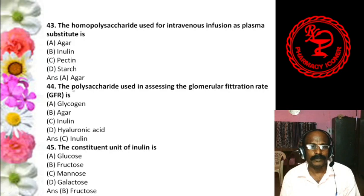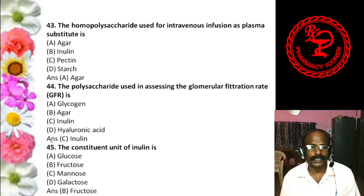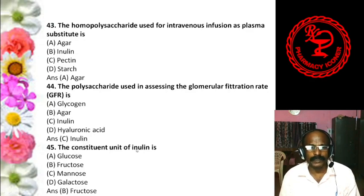Question 7: What happens when dextrin reaches the stomach? Options are: A. Converts to maltose, B. Converts to lactose, C. No digestion, D. Converts to sucrose. The answer is C, no digestion, because dextrin is not digested in the stomach.